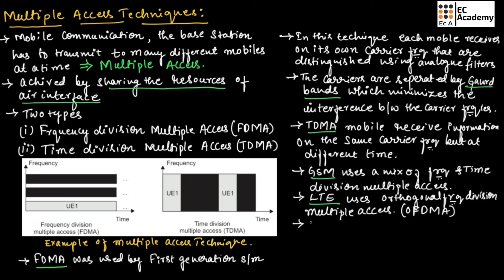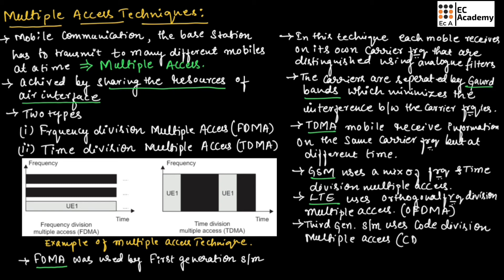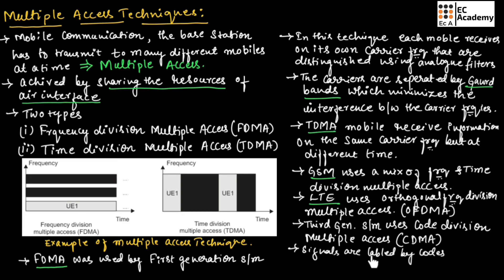The third generation communication system uses a technique known as code division multiple access, commonly known as CDMA. In this technique, the mobile receives information on the same carrier at the same time, but the signals are labeled by codes, which allows the mobile to separate its own signal from those of other mobiles.